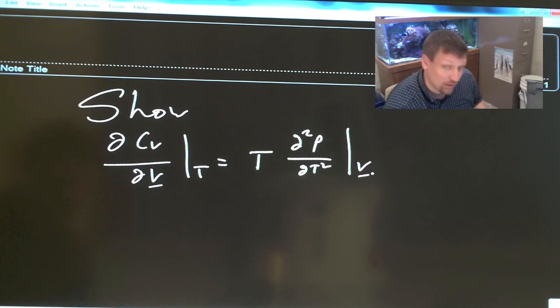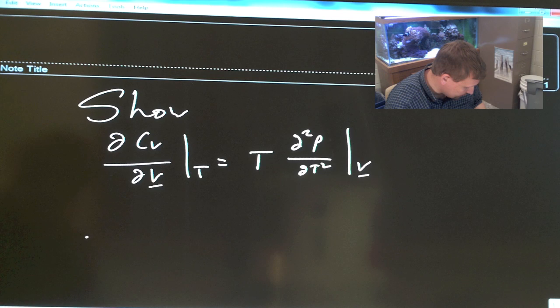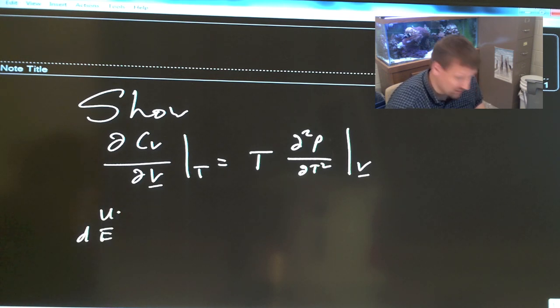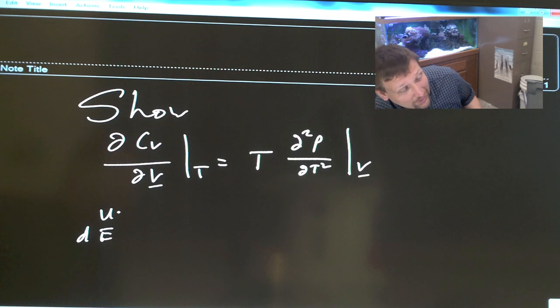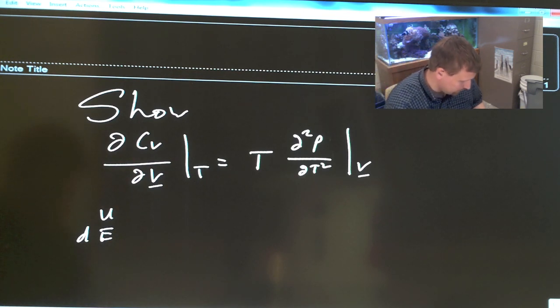So how do we start this problem? We're going to use a slightly different form of differential energy. This could be internal energy U. E is used sometimes in physics, so we're just going to use E here. Sometimes also E in engineering means total energy in the system, which can be somewhat confusing, but here I'm just using it to mean internal energy.